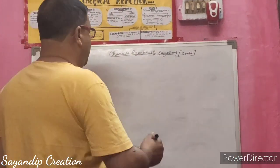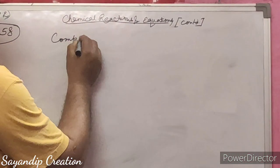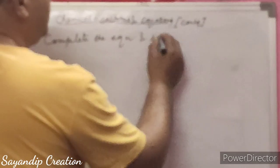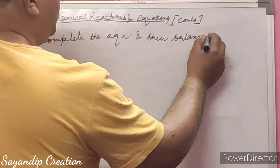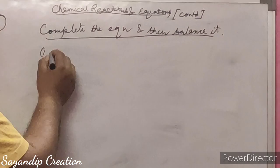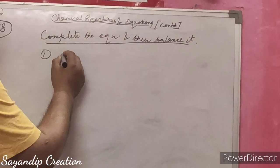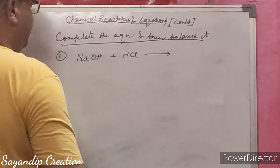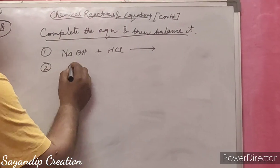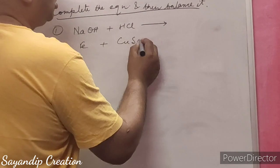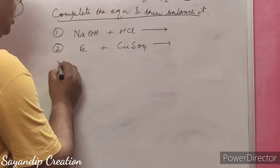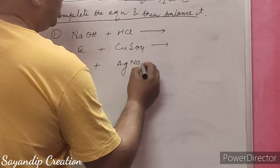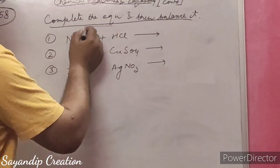The third type is: complete the equation and then balance it. For example: NaOH + HCl → ?, iron + copper sulfate → ?, and zinc + silver nitrate → ?. These are all reactants; you have to write the products and then balance accordingly.